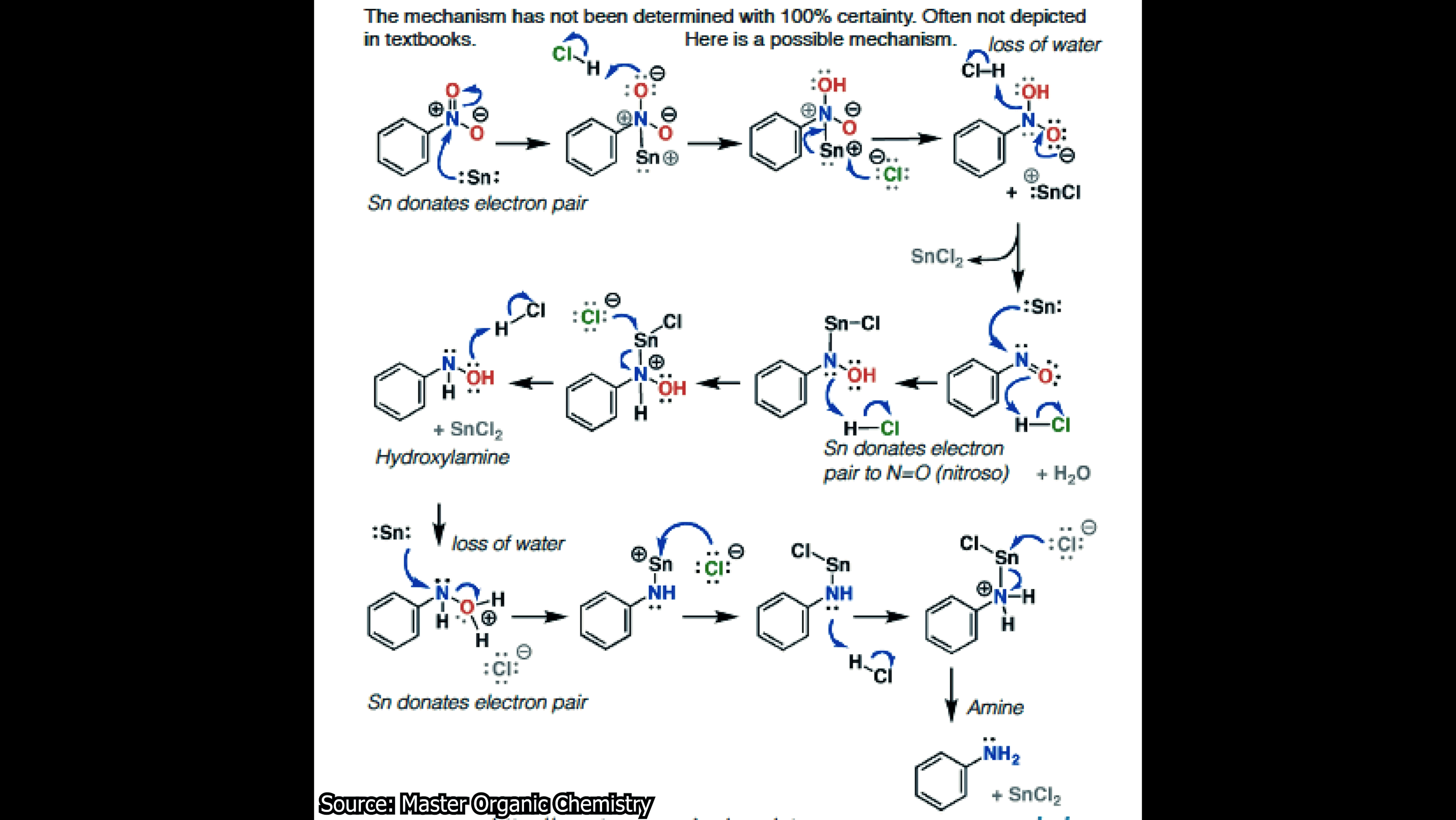Now obviously this mechanism isn't 100% certainty, but it does bring up some pretty cool reactions. It starts with tin donating an electron pair, and then essentially it just builds its own leaving group with the acidic solution.